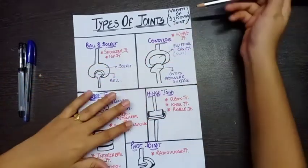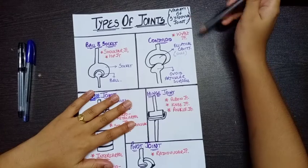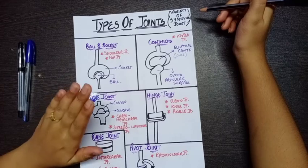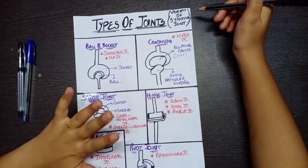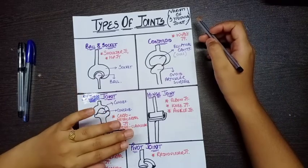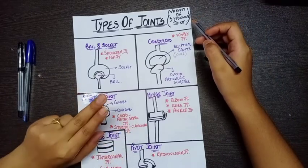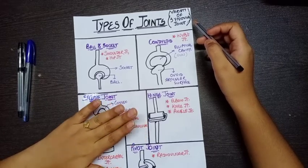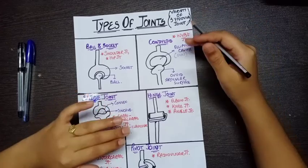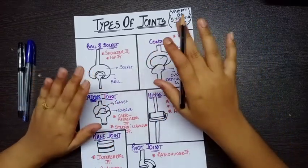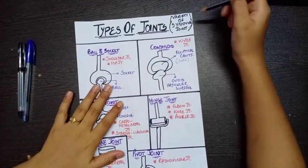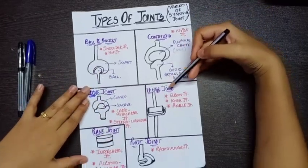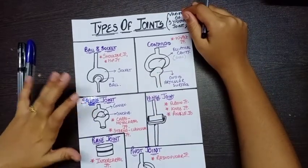A synovial joint is a joint between two articular surfaces which have a synovial membrane lining in their joint capsule and are filled with synovial fluid. Synovial joints are further divided into six varieties: ball and socket joint, condyloid, saddle joint, hinge joint, plane joint, and pivot joint.